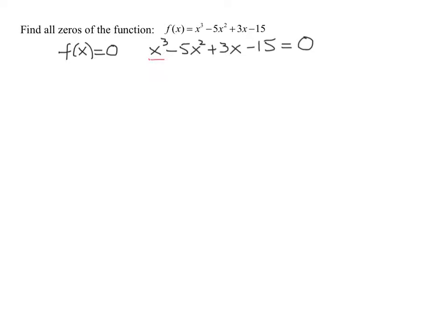So you're going to group the first two terms and the last two terms. Looking at the first two terms, what's the greatest common factor I can pull out of x cubed minus 5x squared?